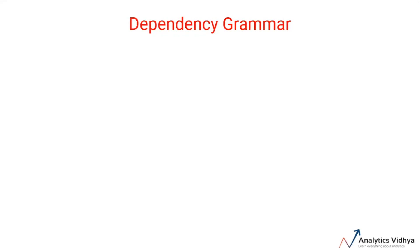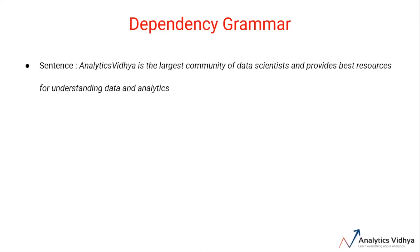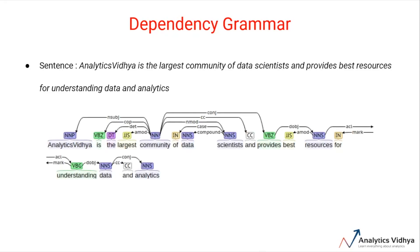Let's consider an example. Consider the sentence: 'Analytics Vidya is the largest community of data scientists and provides best resources for understanding data and analytics.' The dependency tree of this sentence looks something like this. In this tree, the root word is community, having NN as the part of speech tag, and every other word is connected to the root directly or indirectly with a dependency relation such as direct object, direct subject, modifiers, etc. These relationships define the roles and functions of each word in the sentence and how multiple words are connected together.